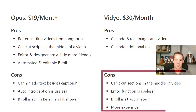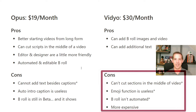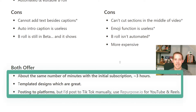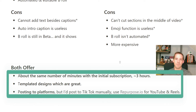Opus also has an editor and designer that's a little more friendly — everything is just easier to use out of the box, simpler and cleaner. It has the new automated and editable b-roll, though still in beta. The cons: b-roll is definitely still rough, you can't add text besides captions (though you can use CapCut or TikTok for that), and the auto intro caption is pretty much useless. For Vidyo, it's a bit more expensive. The pros: you can add your own b-roll images and video — stock footage or your own uploads — and control duration and placement.